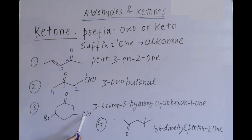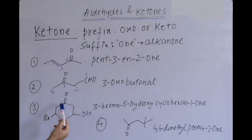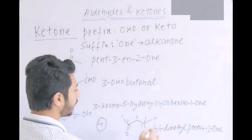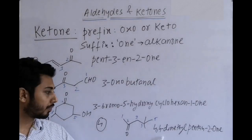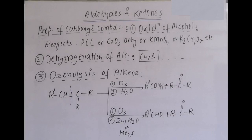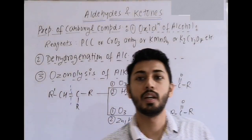Third example has C=O, OH, and a substituent. Carbonyl is suffix; remaining groups become prefixes. Numbering from the C=O carbon: 1, 2, 3, 4, 5 — '3-bromo' (alphabetically first), '5-hydroxy', giving 'cyclohexanone' or 'cyclohexan-1-one'. Fourth example: numbering 1 to 5, dimethyl at C-4 and C-4 — '4,4-dimethylpentan-2-one'.